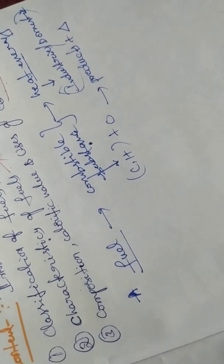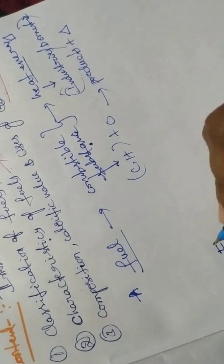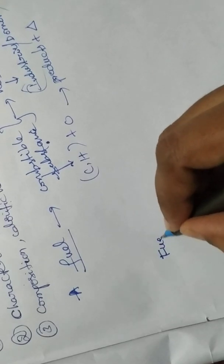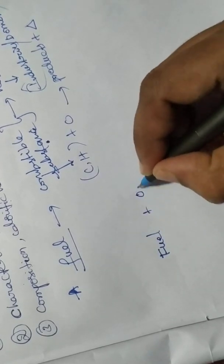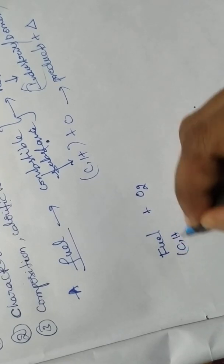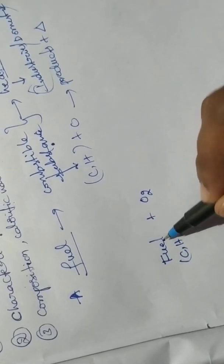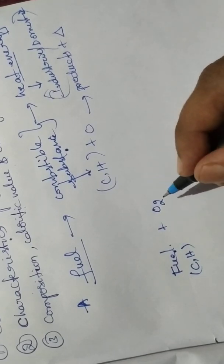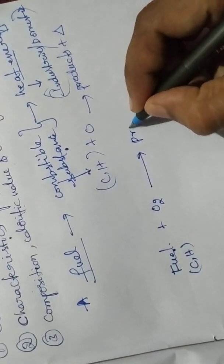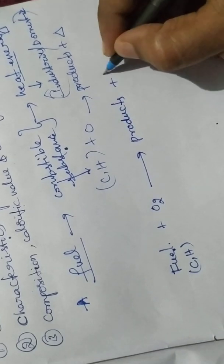So let us see some reactions. Fuel reacts with oxygen. The main elements in fuel are carbon and hydrogen. This combustible substance reacts with oxygen — that is, burning — and gives products along with heat energy.